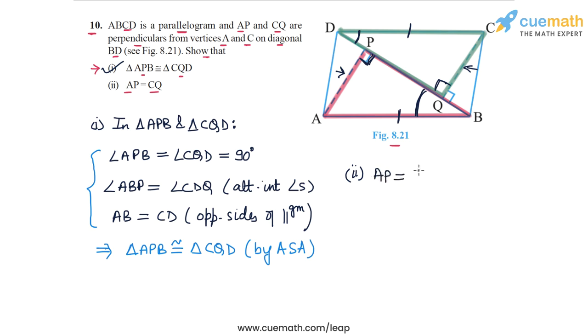We can say that AP is equal to CQ by corresponding parts of congruent triangles for the two congruent triangles APB and CQD. So this proves part two as well. And with this, we have completed question 10.